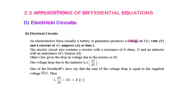produces a voltage of E(t) volts and a current of I(t) amperes at any time t. The electric circuit also contains a resistor with a resistance of R ohms and an inductor with an inductance of L henries.